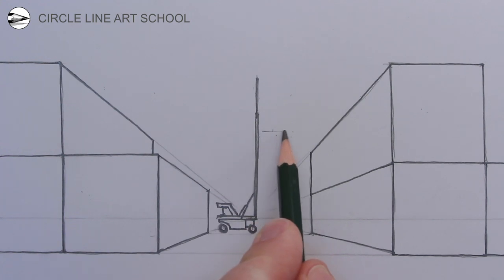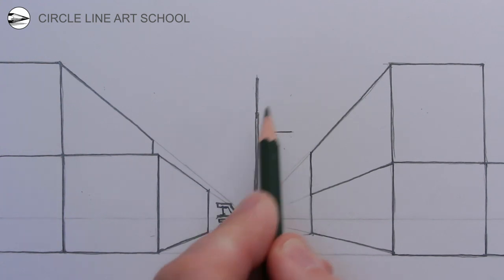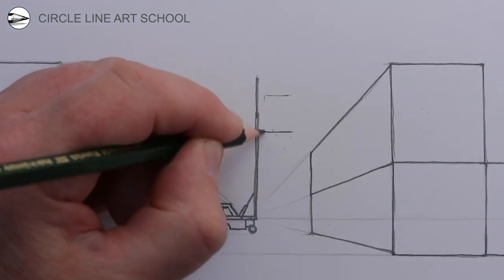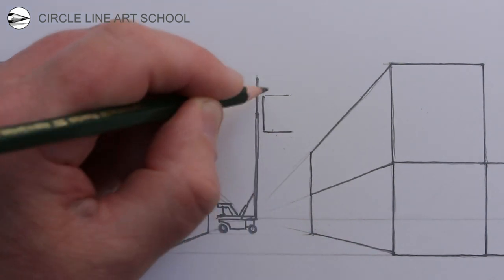Then on the right below the top of the vertical arm draw the front of a container, but much smaller than the other containers that we've drawn so far, because it's further away from us.